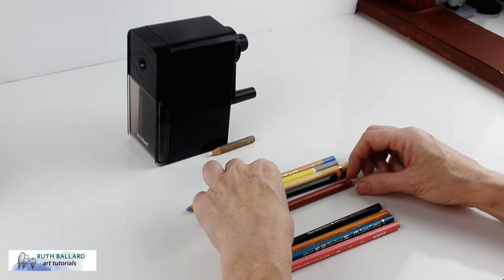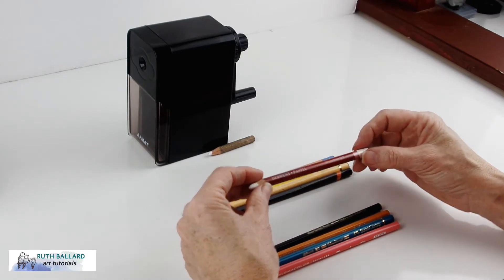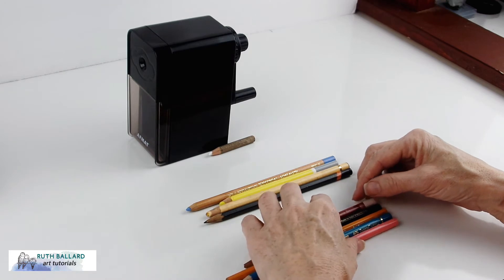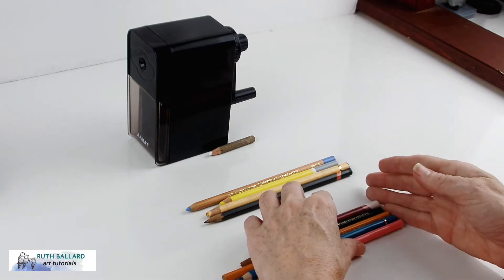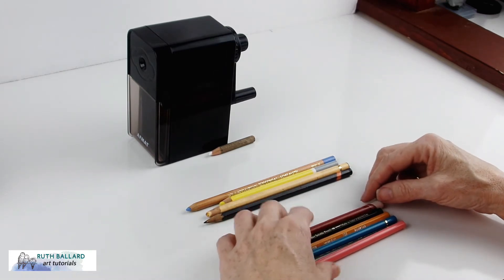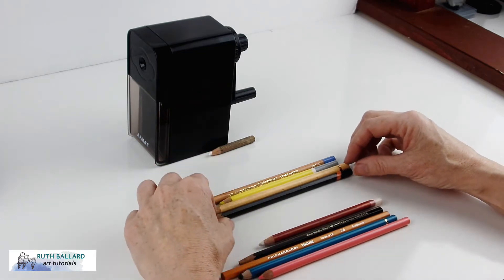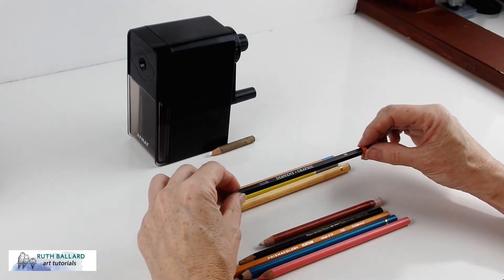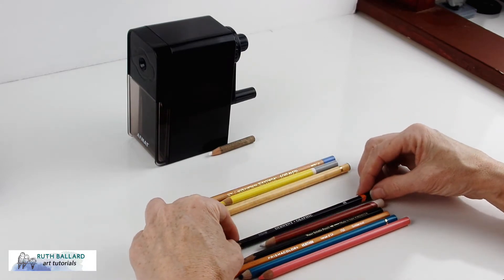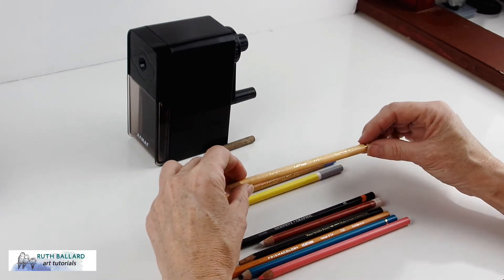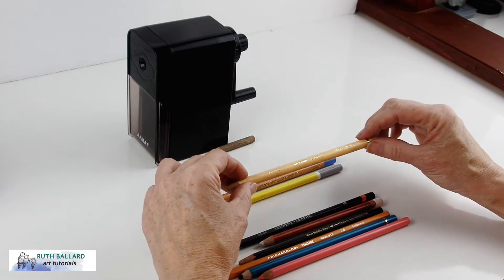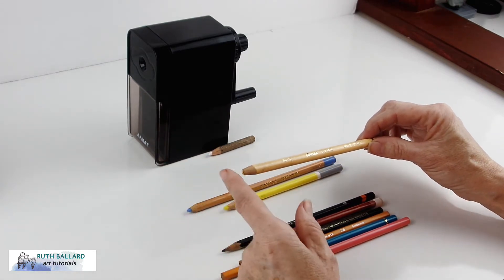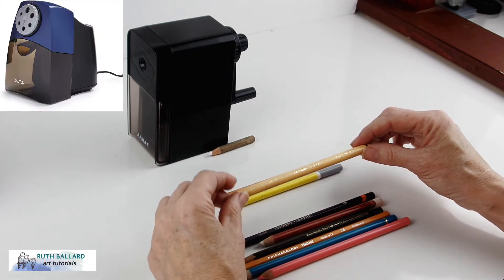Then I thought I'd try a thicker one, a Derwent Pastel pencil, the Chinese white which is popular if you like charcoal pencils and mid-tone grey or black papers, and then this is just a drawing pencil, an HB, and I'm going to try that Conte Aparis one that apparently they say it will sharpen.